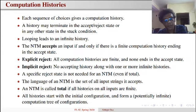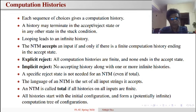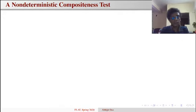We typically arrange histories in a computation tree. Each history starts with the initial configuration. If there are multiple choices, the machine may go to different configurations. All histories of a non-deterministic Turing machine on a given input are represented by a computation tree of configurations. Let us now see an important example: a non-deterministic compositeness test.